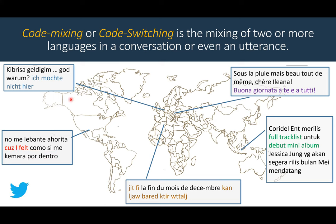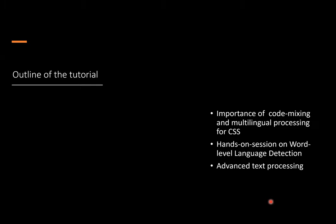We have, for example, a mix of German and Turkish, a mix of Spanish and English, a mix of Arabic and French, and so on. Linguists call this code mixing or code switching, where 'code' means not code as in a program, but a language. And mixing or switching is obvious what it means. There is a subtle difference between what is mixing and what is switching, but for this tutorial and for most computational work, that may not be so relevant, so we will ignore that.